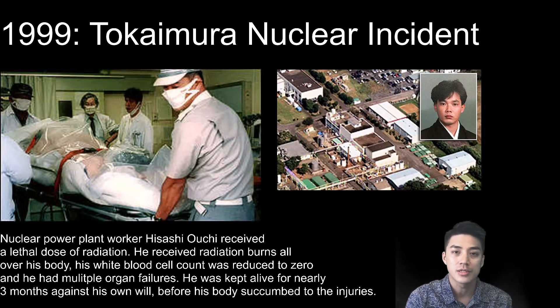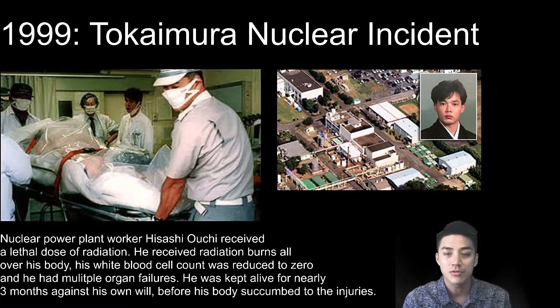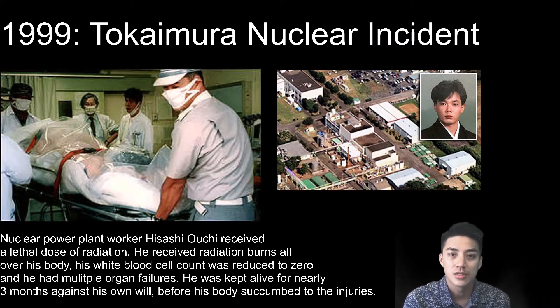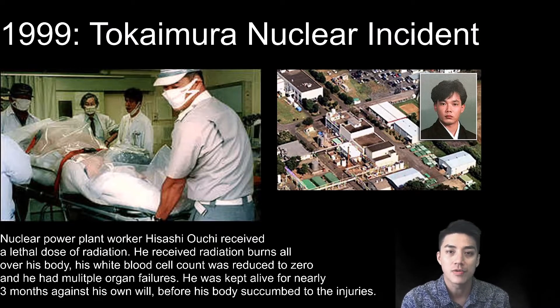During the Tokai Mura nuclear incident, lab technician Hisashi Uichi received a lethal dose of radiation. He received radiation burns all over his body, his white blood cell count was reduced to zero, and he had multiple organ failures. His body was literally melting from the inside out.